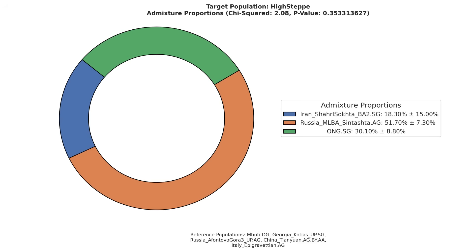In a Bronze Age model, the highest steppe individual was found to have 52% steppe, 18% Indus Valley, and 30% Ancient Ancestral South Indian ancestry.